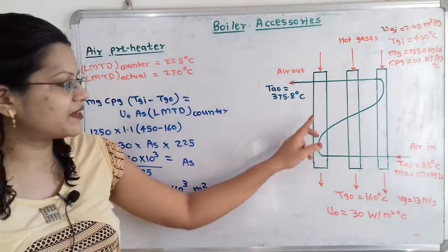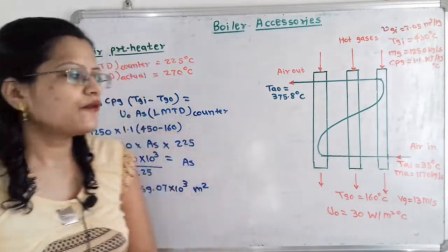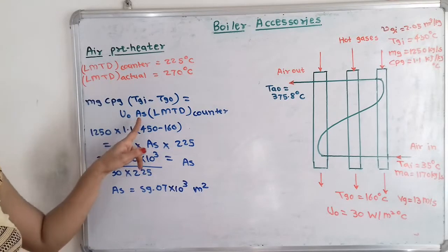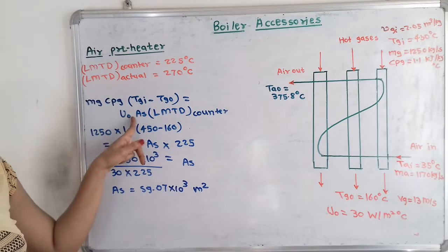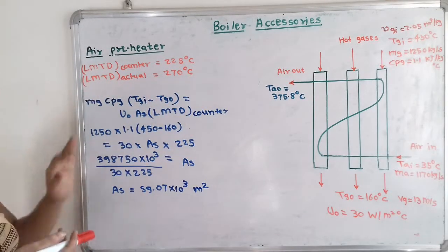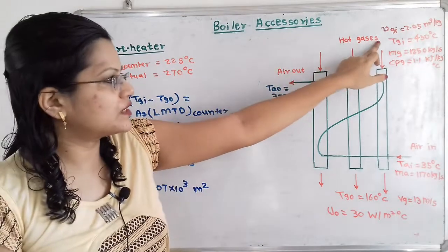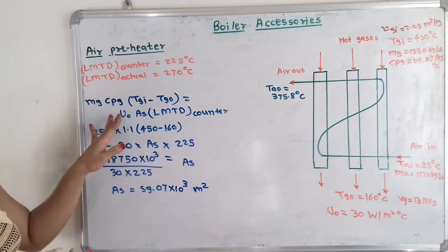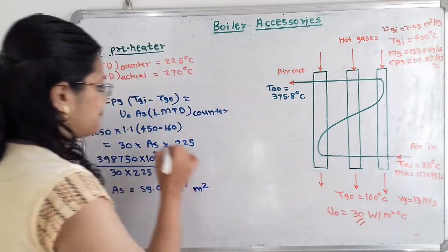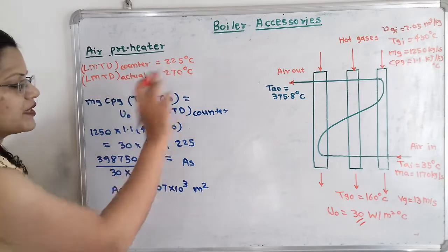Now we calculate the total surface area of the tubes using the heat transfer formula: Mg times CpG times (TGI minus TGO) equals UO times AS times LMTD counter. Substituting: 1250 times 1.1 times (450 minus 160) equals 30 times AS times 225. UO is in Watt per meter square degree Celsius and AS is the unknown surface area in meter square.